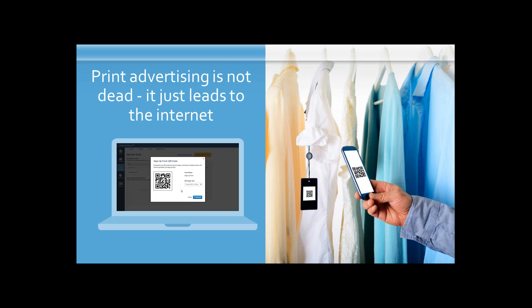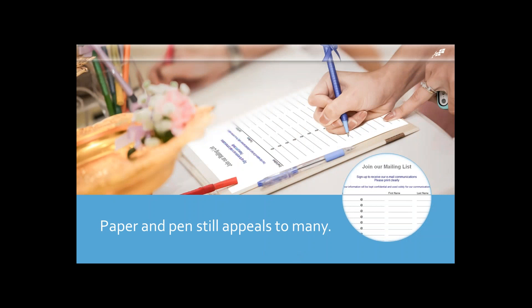Print advertising really isn't dead — no matter what the naysayers say, it's here to stay. Paper tends to lead to the internet where further action is meant to take place. That's one way you can take advantage of a QR code — it requires a smartphone user to use a scanner app on their device to scan a code linked directly to your sign-up form or website. In the example shown here, there are articles of clothing hanging in a retail store. Someone scans that QR code, which then leads to a sign-up form where people fill out and leave their email addresses — somewhat similar to the text-to-join feature, except the QR code is what triggers it.